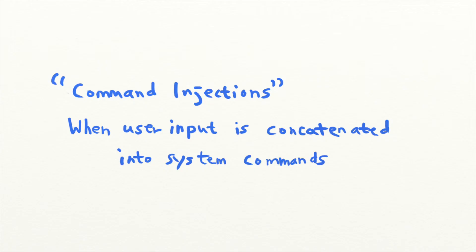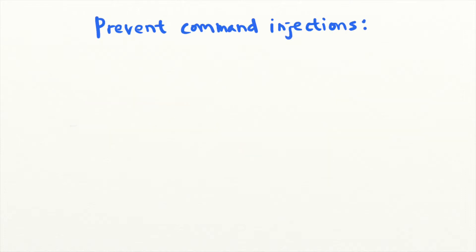Welcome back to Security Simplified. Last time, we talked about command injection, a type of remote code execution that happens when user input is concatenated directly into a system command. This time, let's go into a bit more detail about how to prevent these dangerous vulnerabilities.